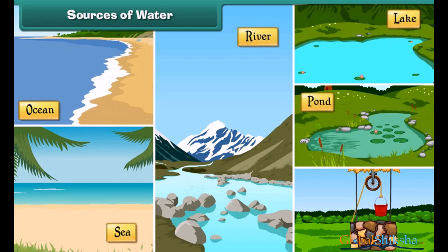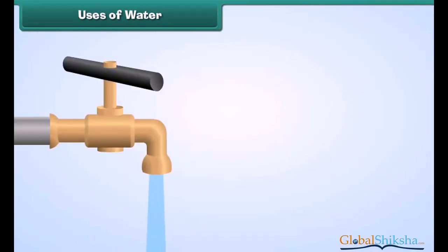Oceans, seas, rivers, lakes, ponds, and wells are sources of water on earth.